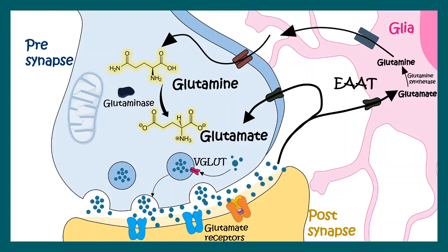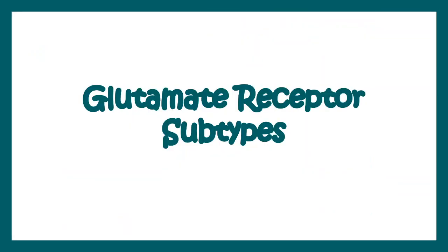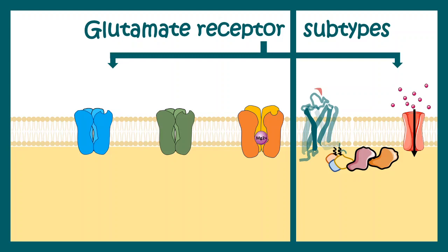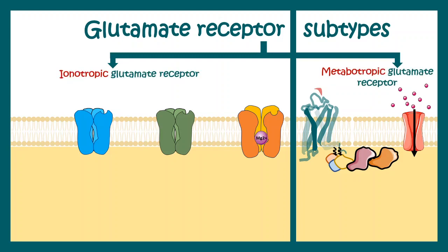Glutamate synapse is one of the excitatory synapses, and there are many others. In this video, let's focus on glutamate and how they work at a synaptic level. In order to understand that, we need to understand glutamate receptors and their subtypes. Glutamate receptors are broadly divided into two categories: ionotropic glutamate receptors and metabotropic glutamate receptors.